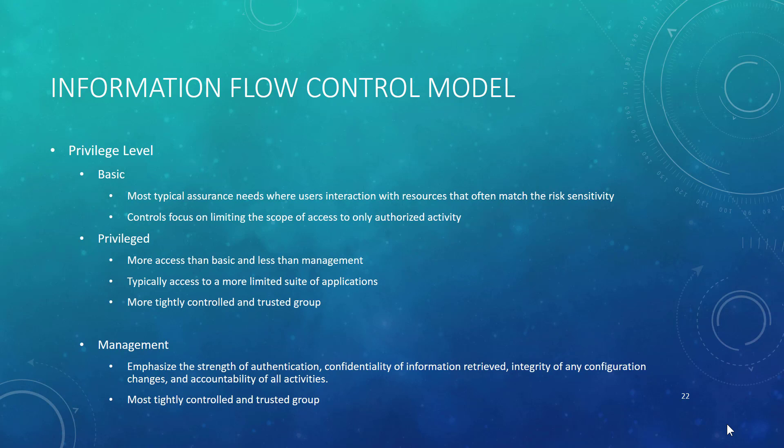That brings us to the end of this third of six videos. We very briefly explored information flow as a different control model, introducing the topic. We've looked at different components of trust associated with this and associated with making threat decisions, and that's how it influences risk. Next video, we're going to pick up and start looking at patterns and baselines. So keep on studying and keep on learning — I look forward to seeing you in the next video.